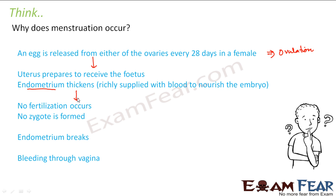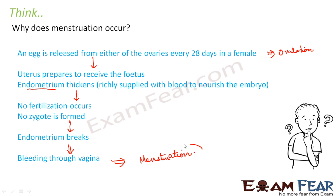When no fertilization occurs, there is no zygote formed, so the zygote doesn't come to the uterus. The thickened endometrium becomes unnecessary, so it breaks. As a result of this breaking, the blood which got collected there comes out through the vagina in the form of bleeding. This bleeding through the vagina is known as menstruation, and this is why it takes place in every female every 28 days.